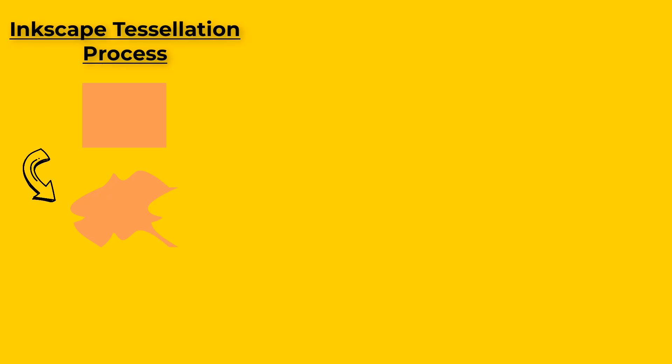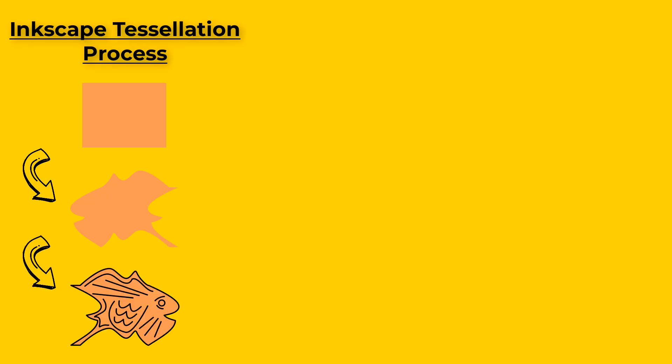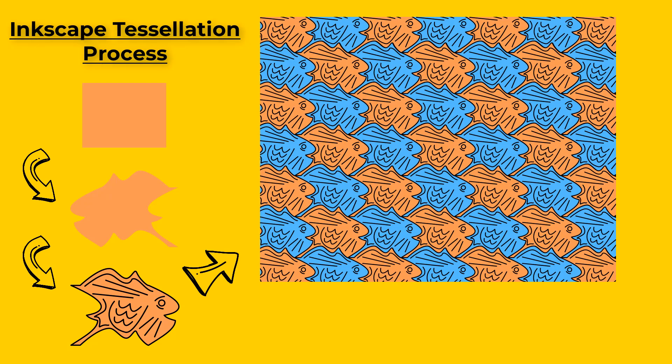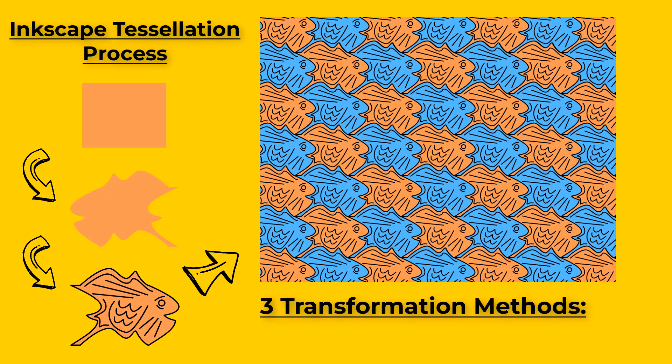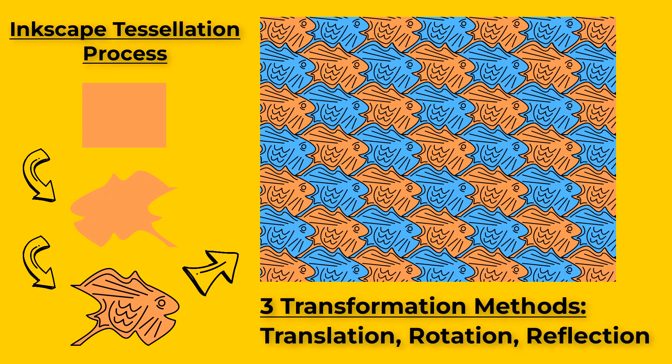Here's a summary of the process I'll be demonstrating today. I'll start with a plain old rectangle, then transform that into a shape which we'll still be able to tessellate. Once I decide what I want it to be, I'll add some embellishments with some lines. Finally I can fit everything together into the tessellation pattern. There are three transformation methods we can use: translation, rotation, and reflection. In this video I'll focus on the translation method.